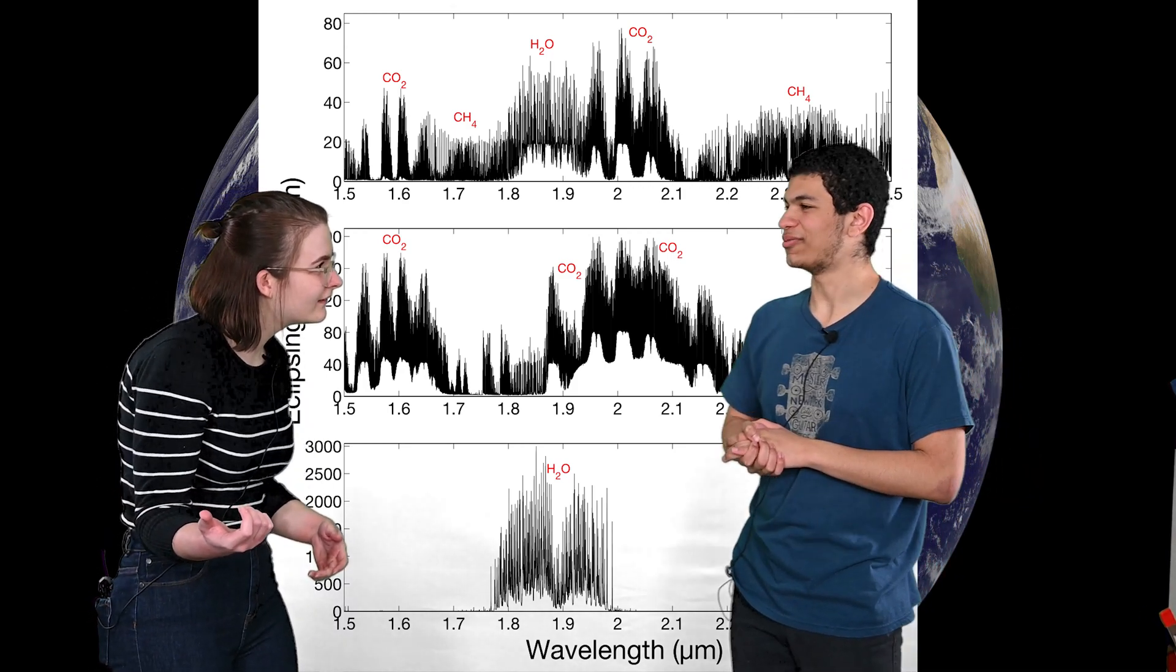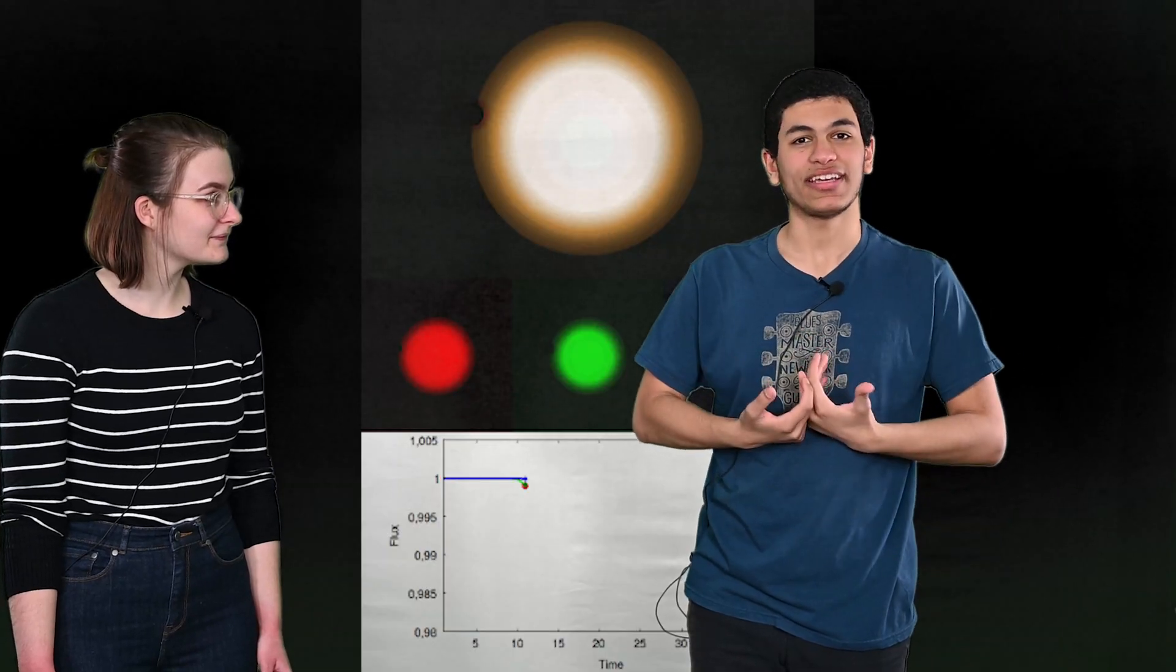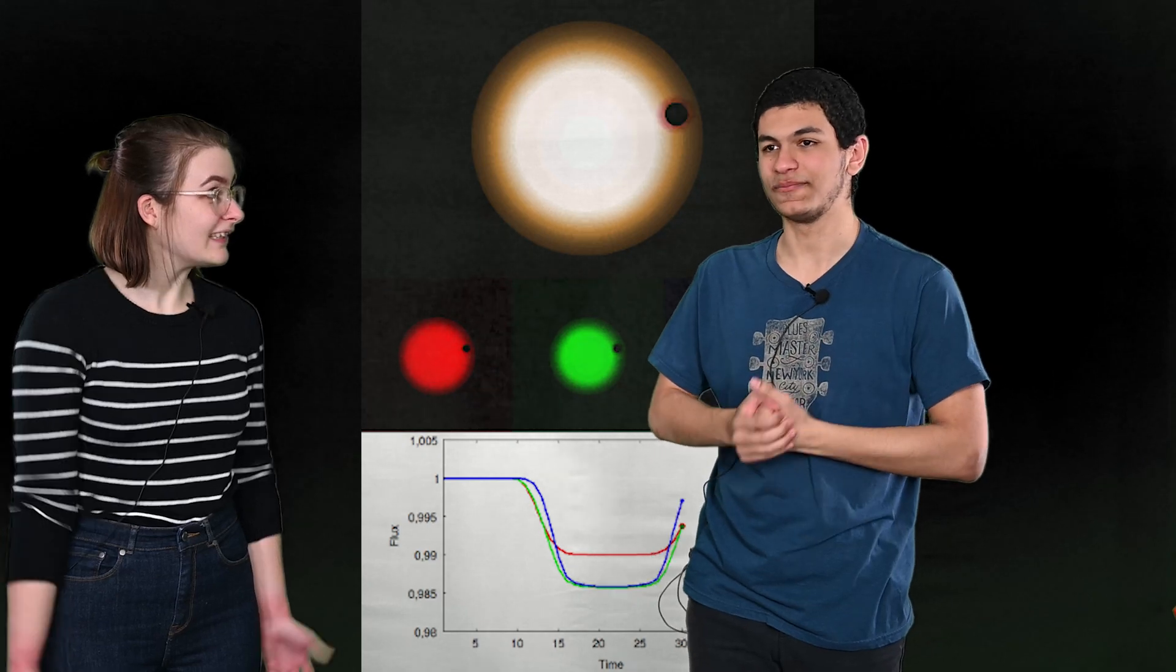Oh, that's cool. Yeah. So every atmosphere of every exoplanet is going to have its own unique barcode. Oh, and we can see that with telescopes based on how much light gets reflected or absorbed when the exoplanet passes in front of its host sun. Exactly.